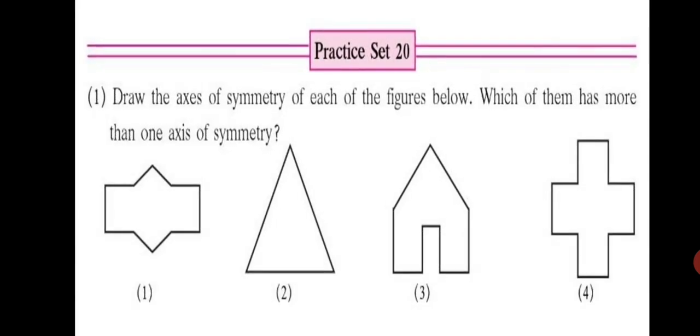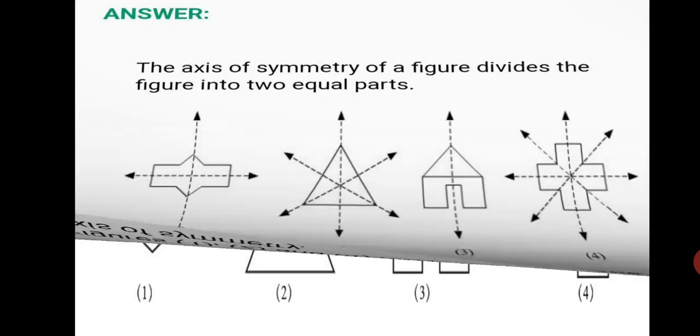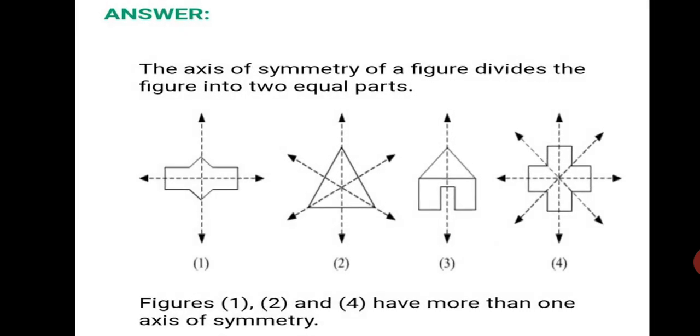Question 1. Draw the axis of symmetry of each of the figures below. Which of them has more than one axis of symmetry? The axis of symmetry of a figure divides the figure into two equal parts. So, you have to draw as many possible axes you can draw for the given figures.